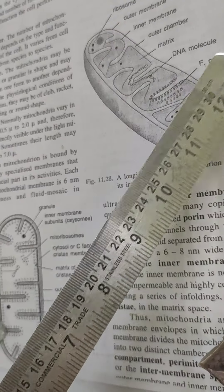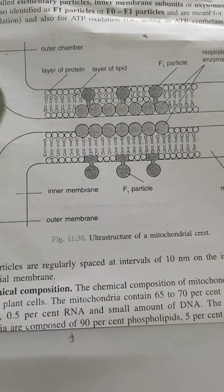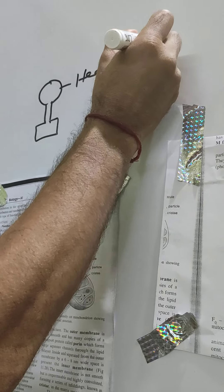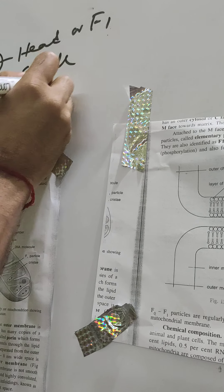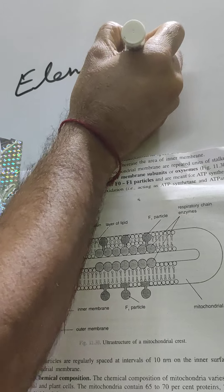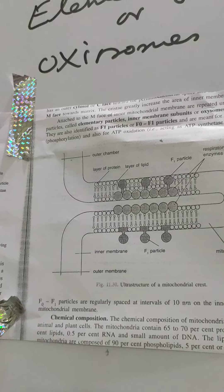Inside the cristae there are elementary particles. Elementary particles have three main structures: one is called the head or F1, then the stalk, then the base or F0. These elementary particles are also called oxysomes, or the subunits of Fernandez and Moran, because they discovered them.